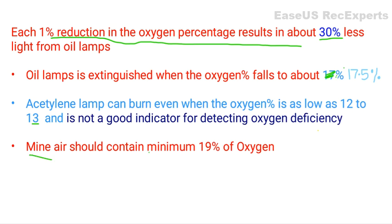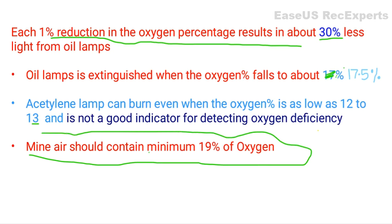A very important point: mine air should contain a minimum of 19% oxygen. This is also included in the mining laws — the mine air must contain a minimum of 19% oxygen. However, acetylene lamps can burn even when the oxygen percentage is as low as 12 to 13%, which means they are not a good indicator for detecting oxygen deficiency. Human beings can survive in an atmosphere containing as low as 15% oxygen, but in mines, a minimum of 19% is required.